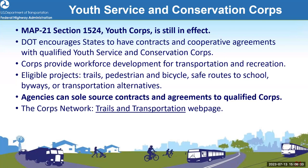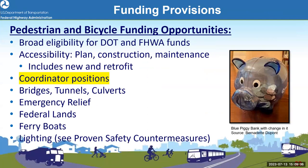There are provisions in the law to sole-source contracts and cooperative agreements to Qualified Youth Service or Conservation Corps to perform service work. The Corps Network, which represents youth service conservation nationwide, has resources on its trails and transportation webpage. We also have a table available on pedestrian and bicycle funding opportunities, currently being updated to add two new programs. Federal surface transportation law provides flexibility to states and MPOs to fund bicycle, pedestrian, micromobility, and trail projects from a wide variety of programs. Bicycle and pedestrian facilities are eligible under nearly all federal aid and federal land highway programs, many USDOT discretionary programs, and FTA programs.